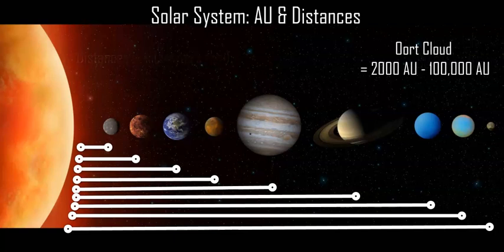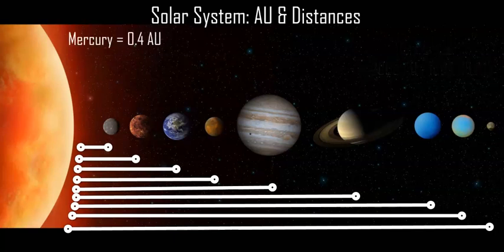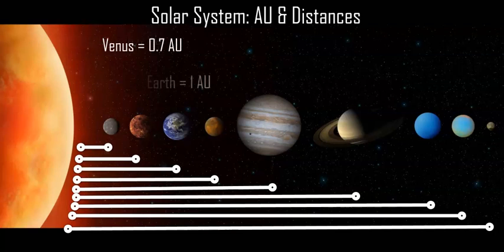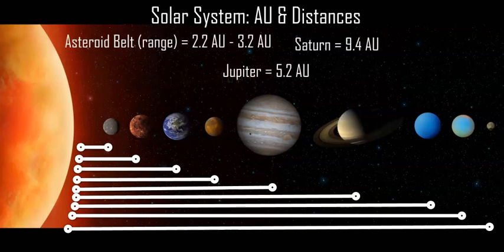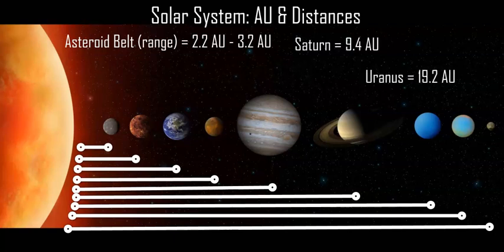So in terms of AU, Mercury is 0.4 AU, Venus 0.7, Earth is 1 obviously - that's based on the unit - Mars 1.52, Jupiter 5.2, Saturn 9.4, Uranus 19.2, Neptune 30.